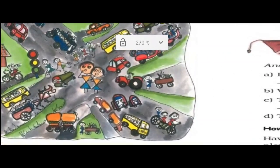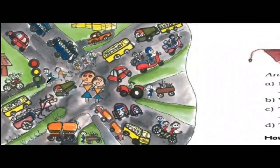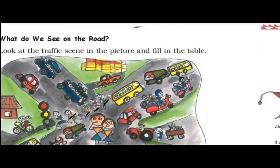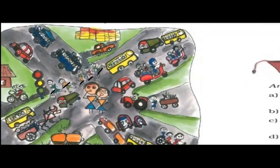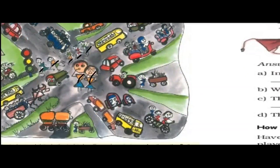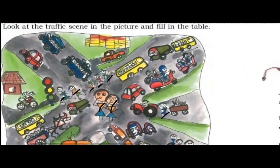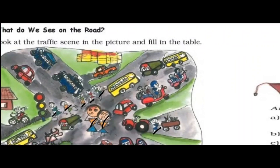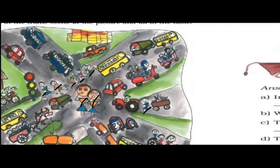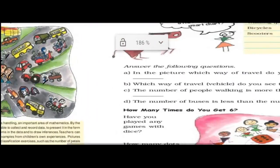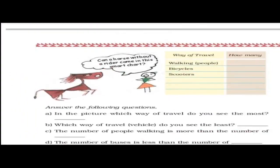Let us see. Counting walking people: 1, 2, 3, 4, 5, 6, 7, 8, 9. There are 9 walking people. So you will write 9 for walking people.